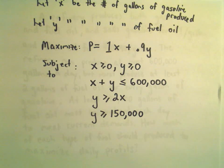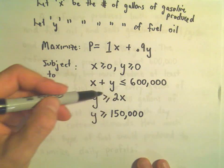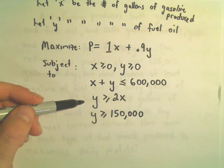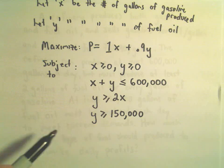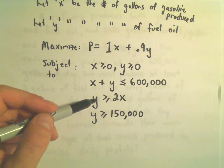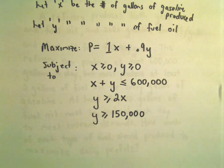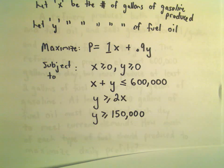So those are all of our constraints. The y greater than or equal to 2x is kind of the trickiest constraint — I know there's a 2 in there somewhere, so be careful there. But once we have our constraints, I think we can just go about graphing, and hopefully we won't have too much trouble coming up with our feasible region.